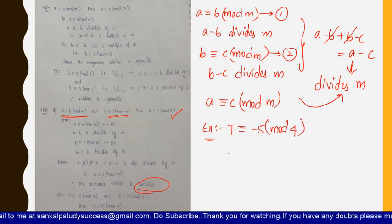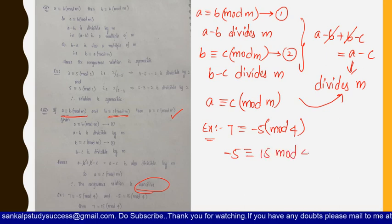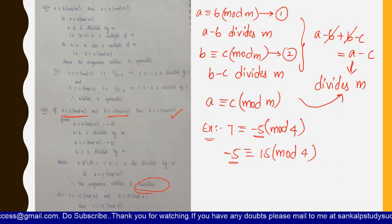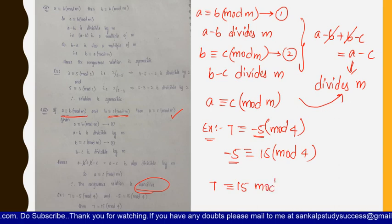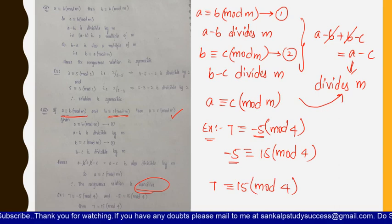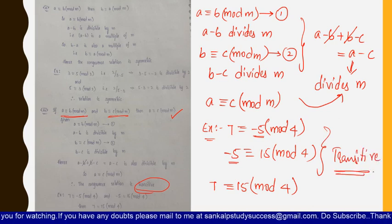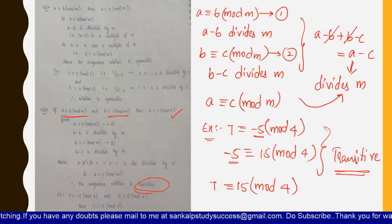As an example of the transitive property: 7 ≡ −5 (mod 4) and −5 ≡ 15 (mod 4). Since a ≡ b (mod m) and b ≡ c (mod m), we get a ≡ c (mod m), that is 7 ≡ 15 (mod 4). These are the three basic properties of congruences. We will meet in the next video.